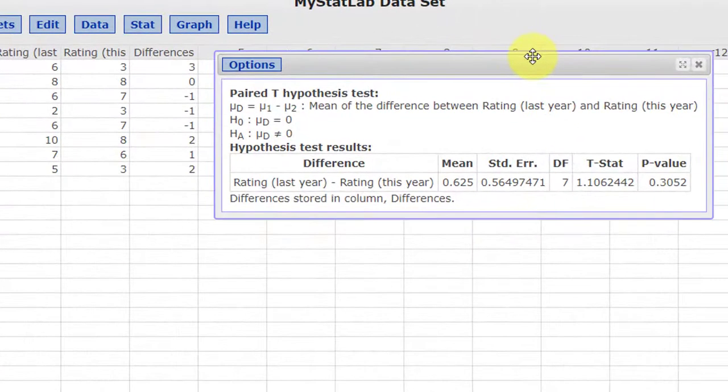And we get our answers here. We get our standardized test statistic 1.106. And we get a P value of 0.305, which means if our alpha is 0.05, that this test is not statistically significant, which means we fail to reject the null hypothesis.